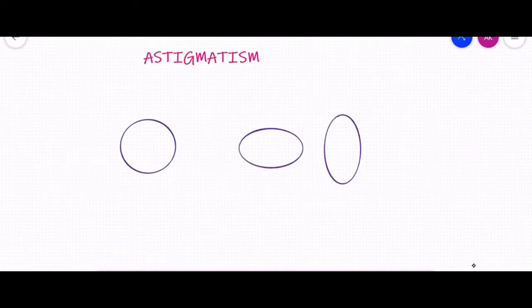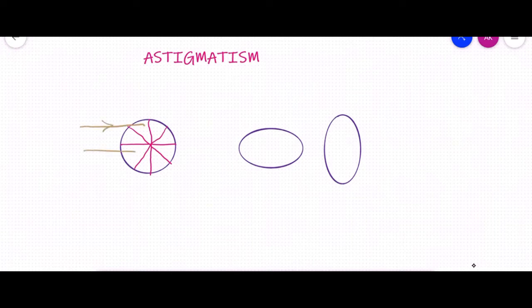Let us have a look at the first circle. If we consider this to be a perfect sphere, all the meridians — whether it is 90 degrees, 180 degrees, or any other meridian — they are all going to be equal and will have equal refractive power. If the rays of light are passing through these meridians, all of them are going to converge at a single point focus, and that point focus we represent as A.